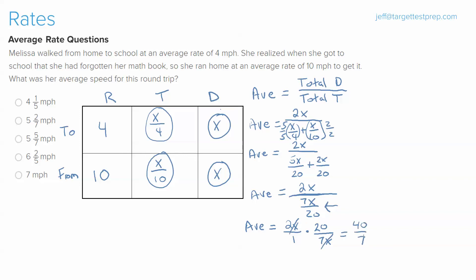Now, if the answer choices had left it as 40 over 7, we would be done. But you can see there are some mixed fractions in our answer choices. So if we convert this to a mixed fraction or a mixed number, you get 5 because 7 goes into 40 five times, and then 5 sevenths, leaving us with answer choice C.